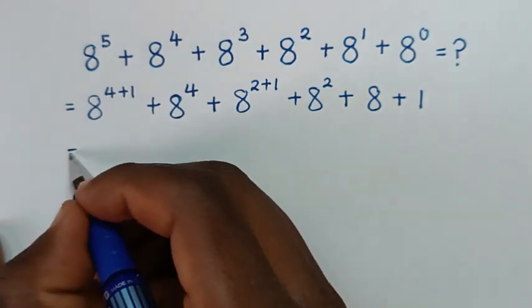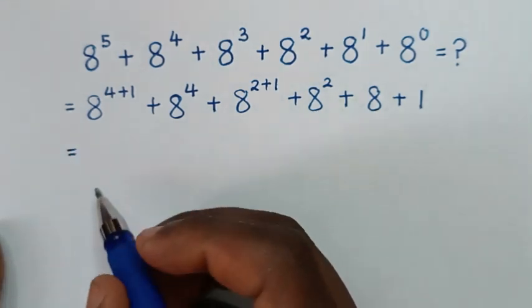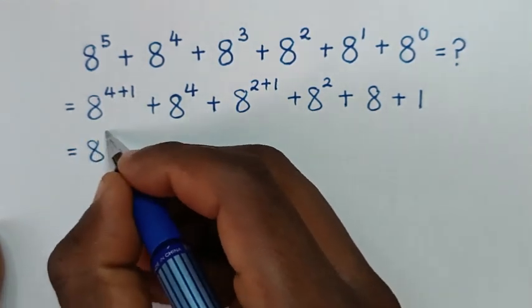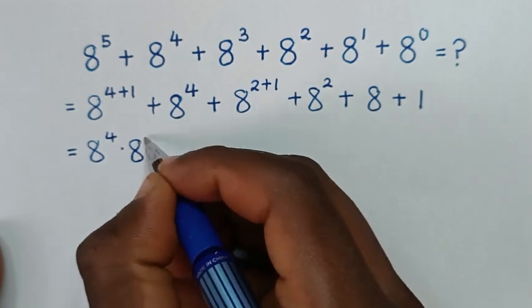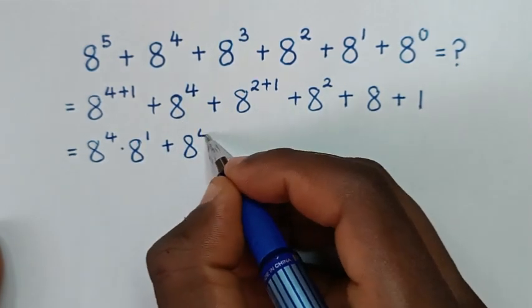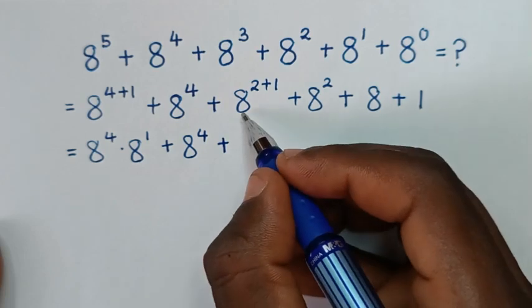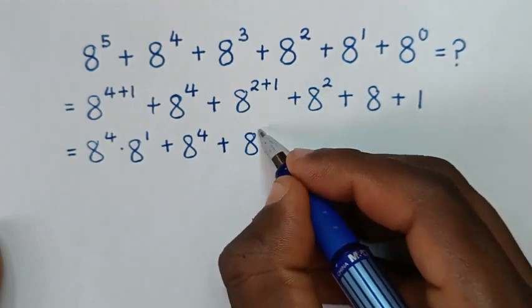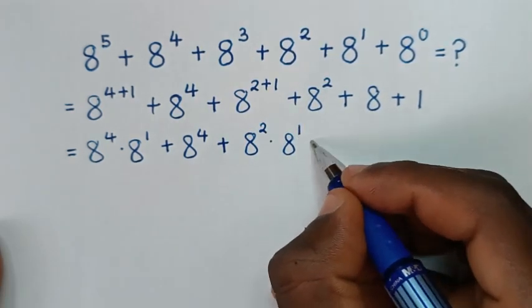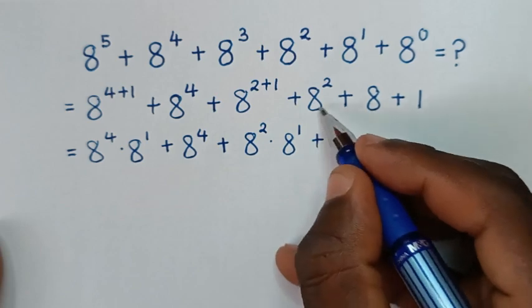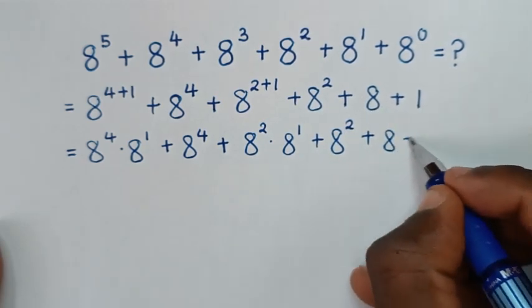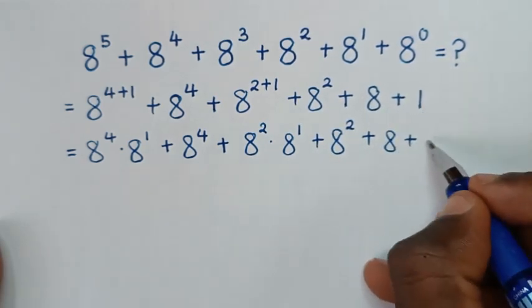In the next step, it will be equal to: 8 power 4 plus 1 is same as 8 power 4 times 8 power 1, then plus 8 power 4, plus 8 power 2 plus 1 is same as 8 power 2 times 8 power 1, then plus 8 power 2, plus 8, plus 1.